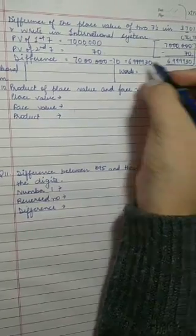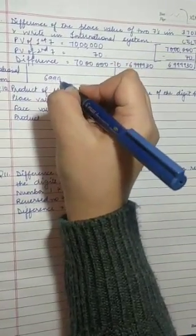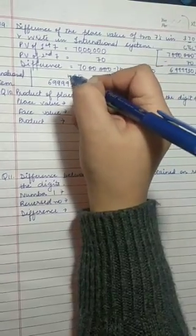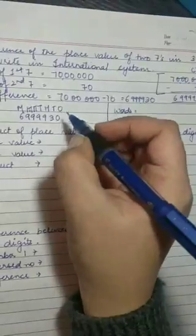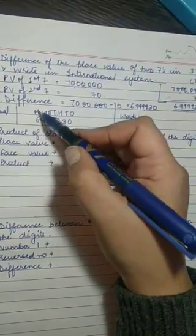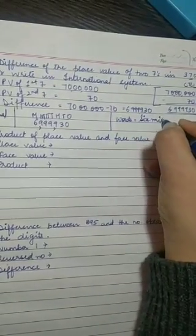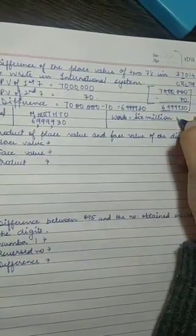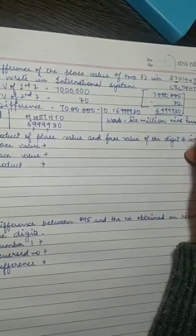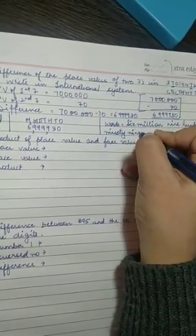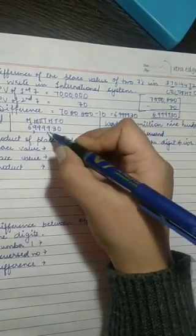Let's write the number first: 9, 3, 0. Writing the places in short form: ones, tens, hundreds, thousands, ten thousands, hundred thousands, and millions — compared to the international system, commas are placed after every three digits. We can now easily write it as: six million, nine hundred and ninety-nine thousand, nine hundred and thirty.